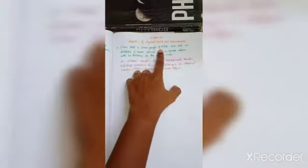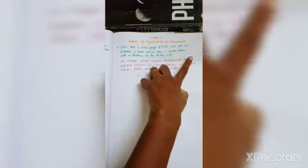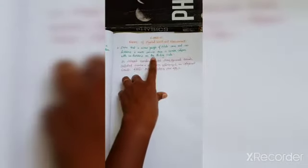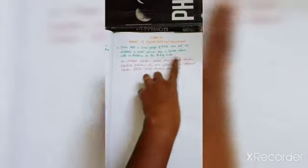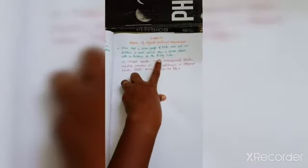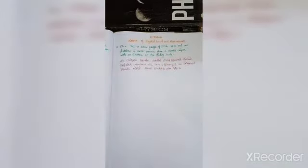Show that a screw gauge of pitch 1 mm and 100 divisions is more precise than a vernier caliper with 20 divisions on the sliding scale. So we will compare these two instruments, vernier caliper and screw gauge.